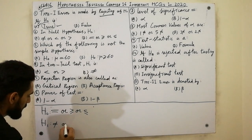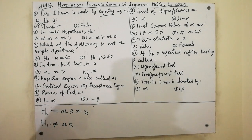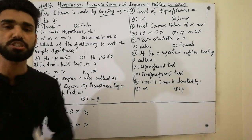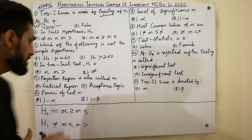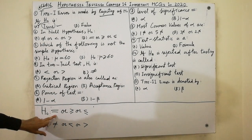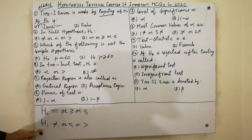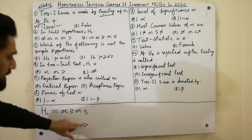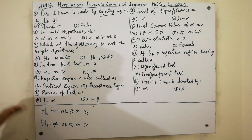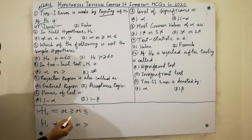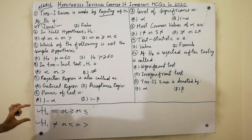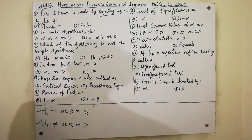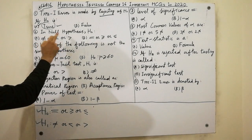Must remember: if H-naught uses greater than or equal, then H1 will use less than. If H-naught uses less than or equal, H1 will use greater than. If H-naught uses equal, then H1 will use not equal. They are opposite to each other. H-naught and H1 have opposite signs — that is the secret of hypothesis testing.